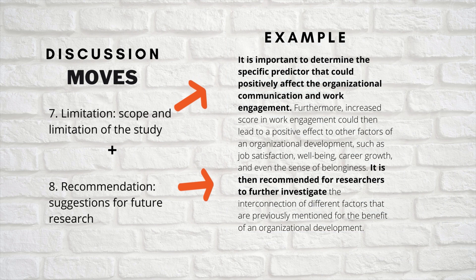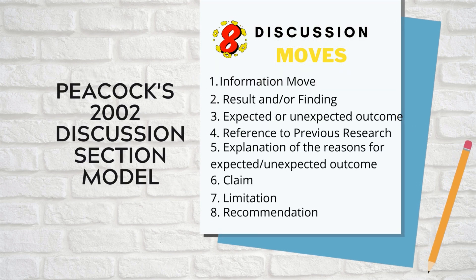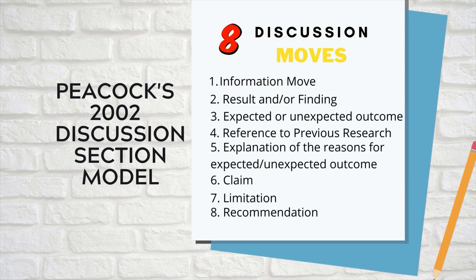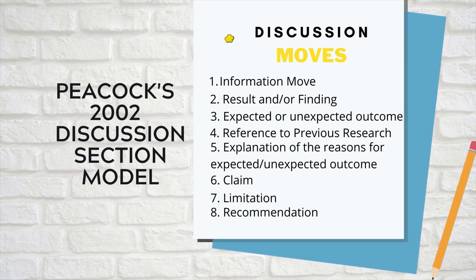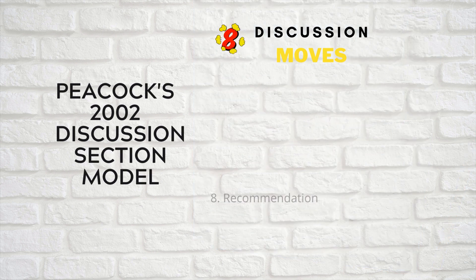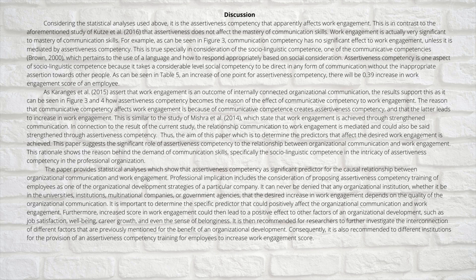Remember, there are eight communicative moves in the discussion section of an empirical research: information move, result and/or findings, expected or unexpected outcome, reference to previous research, explanation of the reasons for expected and unexpected outcome, claim, limitation, and recommendation. When you combine everything, you will have a substantial discussion section. The length of the discussion depends on how many research questions you have to answer or how many hypotheses you need to test and explain.